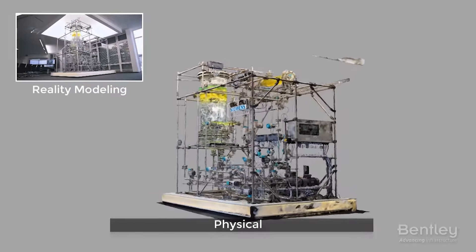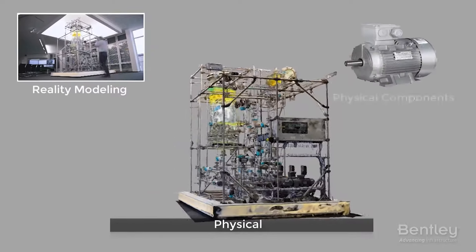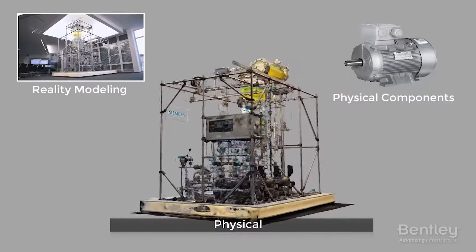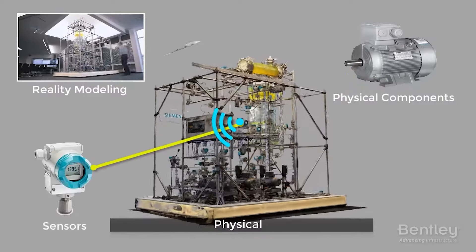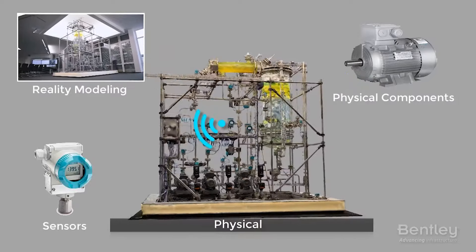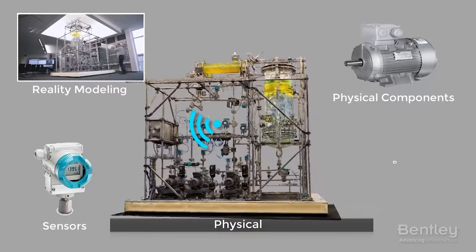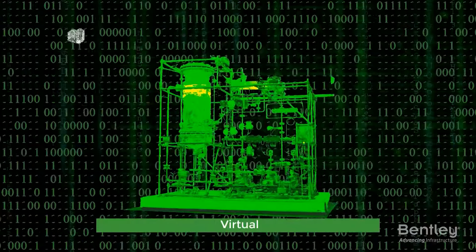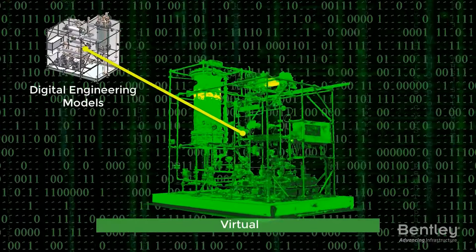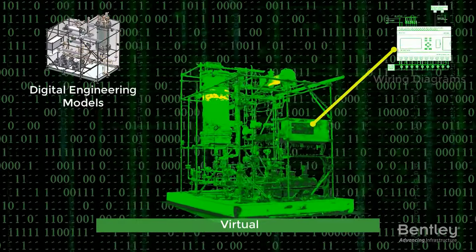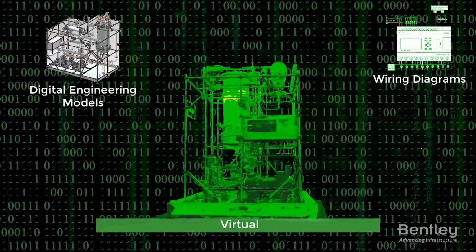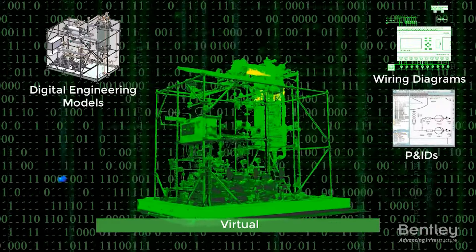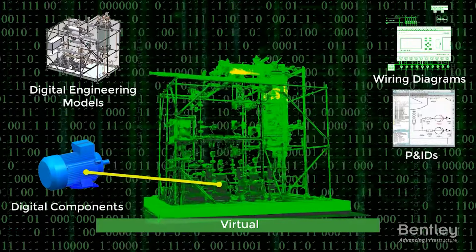Digital twins give us a digital representation of a physical asset, process, or system, as well as the underlying engineering information that allows us to understand and model its performance. Typically, a digital twin can be synchronized from multiple sources, including sensors and continuous surveying, to represent its near real-time status, working condition, and position.